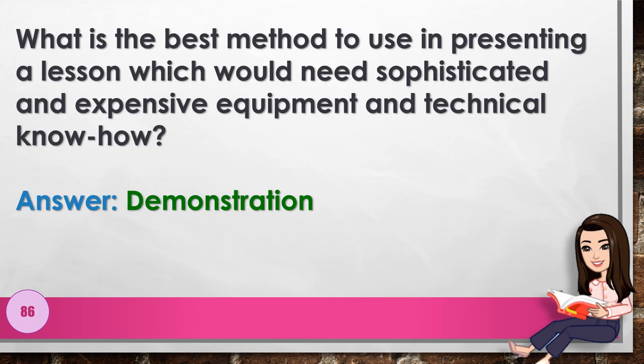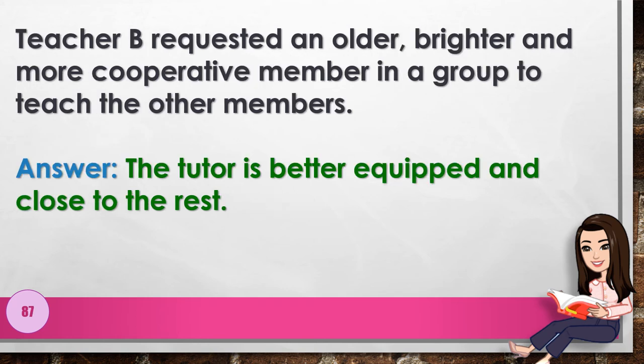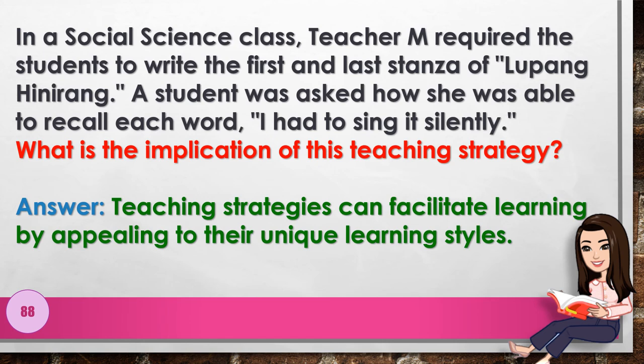Number 86: What is the best method to use in presenting a lesson which would need sophisticated and expensive equipment and technical know-how? Answer: demonstration. Number 87: Teacher B requested an older, brighter, and more cooperative member of a group to teach the other members. Answer: the tutor is better equipped and close to the rest. Number 88: In a social science class, Teacher M required students to write the first and last stanza of 'Lupang Hinirang.'